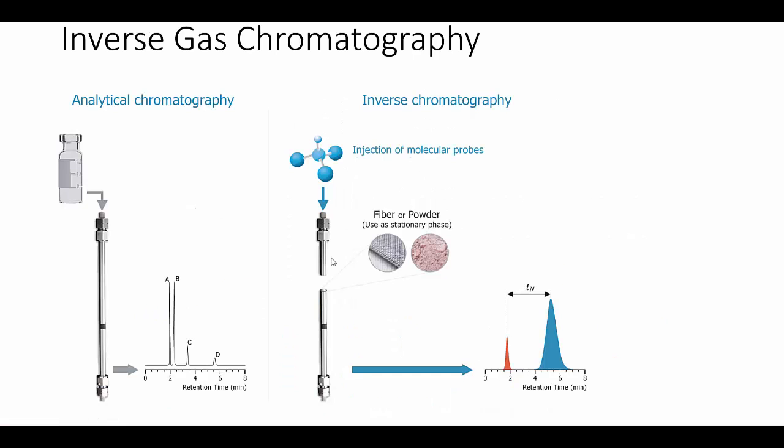We explained in the first video that IGC works by having your test material, fiber or powder, coating a GC column. You inject different known probes like hexane, toluene, or methanol and measure the retention time Tn. From that you calculate a value Vg and then delta G, the free energy of interaction. Refer to the first video if you're not certain what this means.